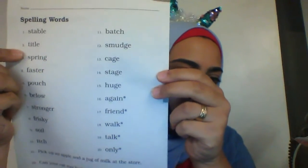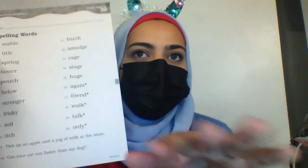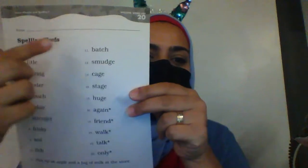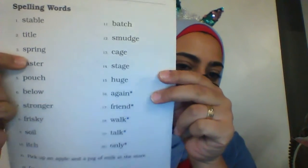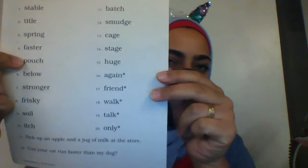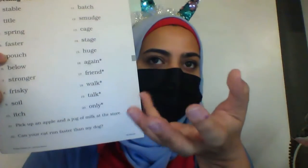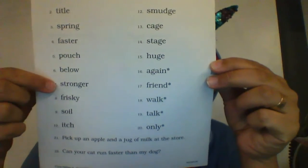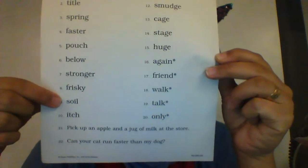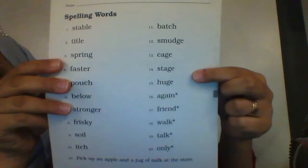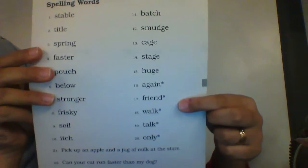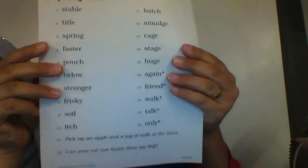Stable. Title — the title of this paper is spelling words. Spring. Faster. Pouch — like a little bag. Below. Stronger. Frisky — frisky means like kind of crazy. Soil. Itch. Batch. Smudge. Page. Stage. Huge. Again. Friend. Walk. Talk. Only. Let's read the sentences.